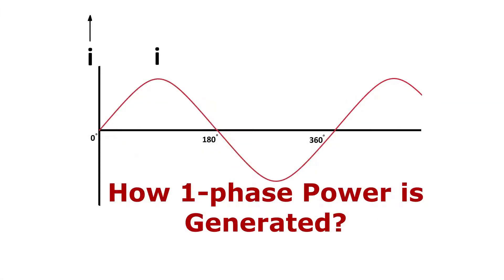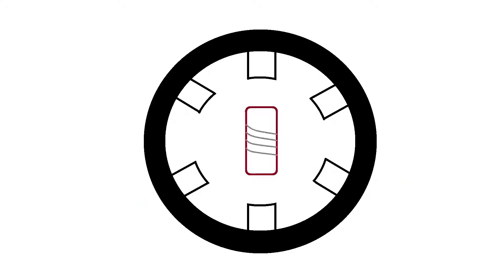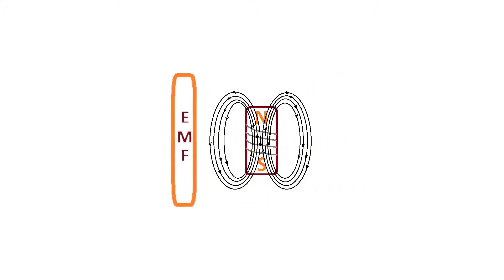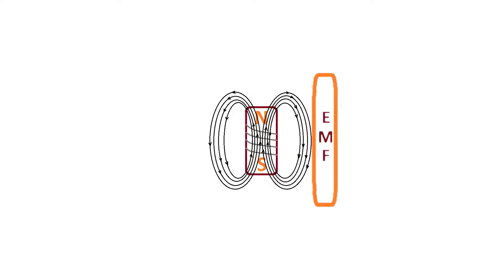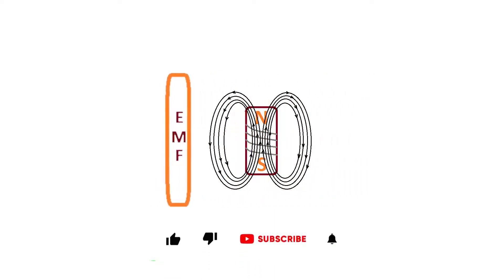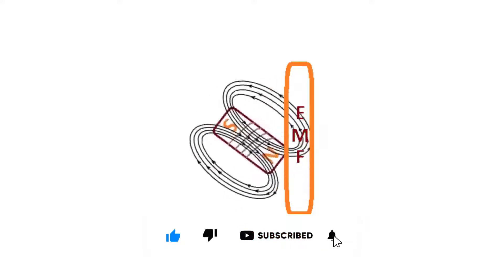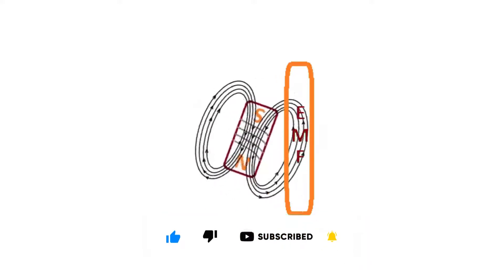Now let's understand how single-phase power is generated. A magnetic field is created in the generator using DC power. DC supply is given to the field windings of the generator, forming the north and south poles. This field winding is mounted in the rotor of the generator. We know that when a conductor is moved in a magnetic field, an EMF is generated in that conductor. Similarly, when a conductor is placed in a moving magnetic field, an EMF is generated in that conductor.